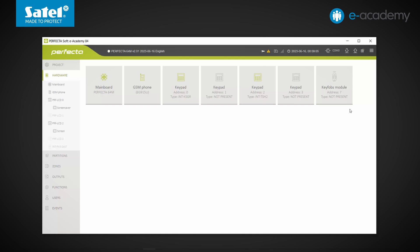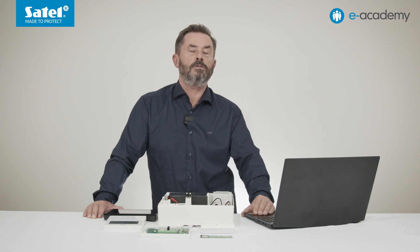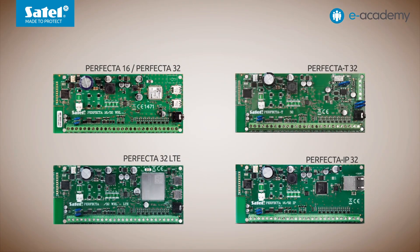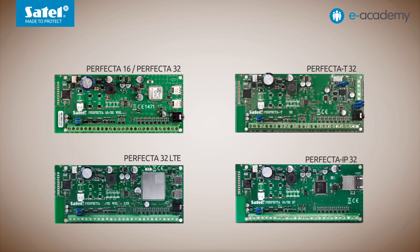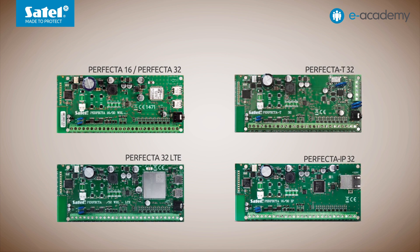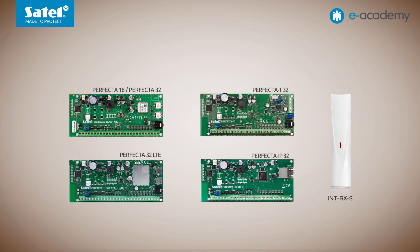At the end of the list is the key fob receiver module. Click on it — the text boxes are empty, which means there is no information about the device because no module is connected or identified. So why are the key fob receiver module settings displayed in the program? This is because the Perfector 64M panel by default behaves similarly to the basic Perfector panel models without the WRL designation — that is, control panels not equipped by default with a micro module supporting wireless devices. It is to these control panels that the INT-RXS key fob receiver module can be connected.